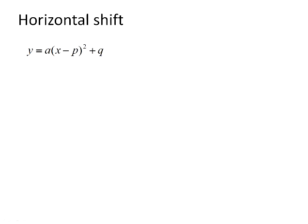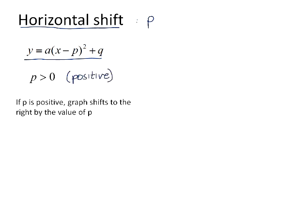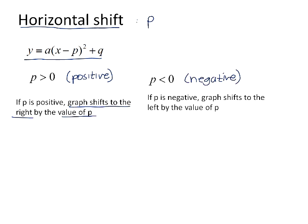We now introduce a new move into the parabola, and that is the horizontal shift. The parameter that shifts the graph horizontally is the p value. So we define a new standard form as y is equal to a times x minus p, all squared, plus q. If p is bigger than 0 — in other words, if p is a positive number — then the graph will shift to the right by the value of p. If p is a negative number, less than 0, then the graph will shift to the left by the value of p.